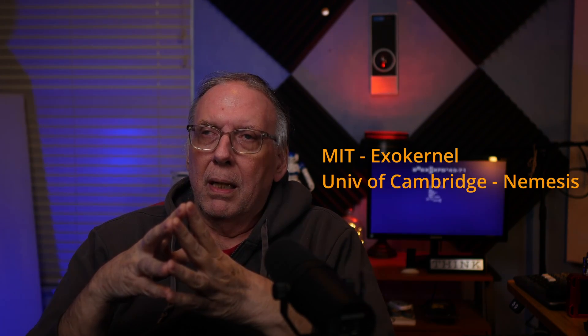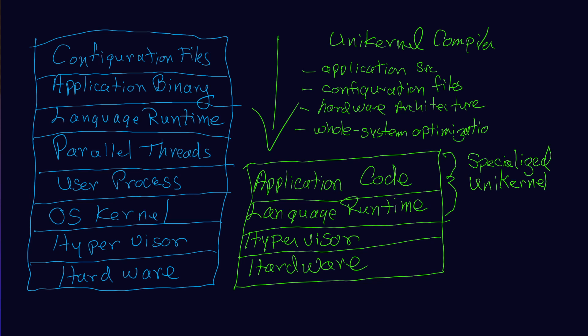The folks at MIT and the University of Cambridge started asking a basic question: what if we just got rid of the operating system altogether? One of the big contributors to unikernels today is Xen, believe it or not. VMware is also working on one — I think the code name was Bombardier. Amazon has one called Firecracker, Google has one called gVisor, and there's also Kata. The unikernel was felt to be the next logical step in the progression from virtual machines over to containers.